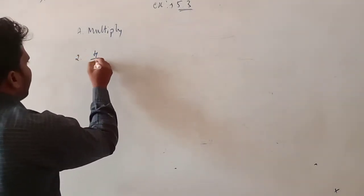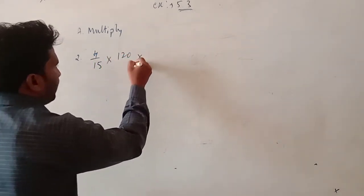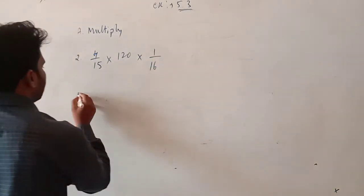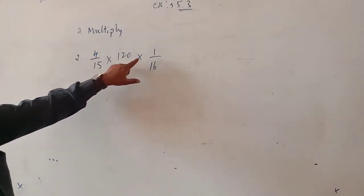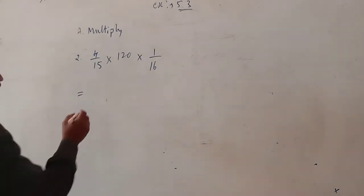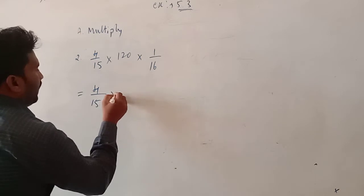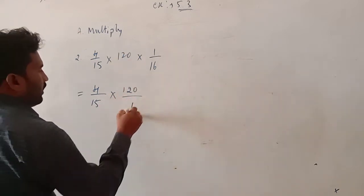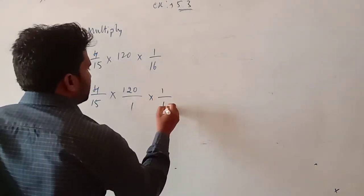Now the second question: 4 by 15 into 1 by 15 into 1 by 16. So one is 4 by 16, another one is 120, and the third one is 160. We should arrange this: denominator and denominator. 4 by 15 into — here only a denominator is given — so there is a denominator of 1. So it is 1 by 16.